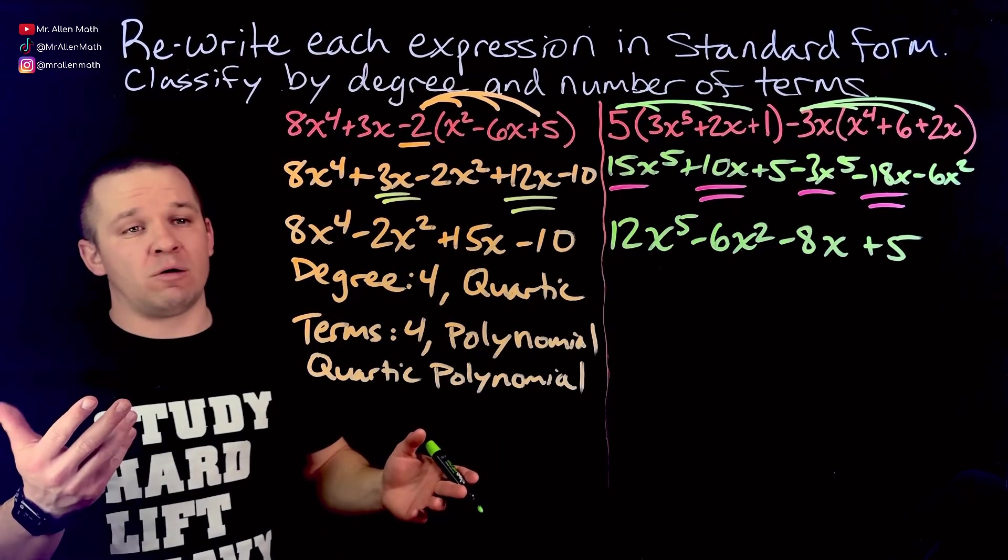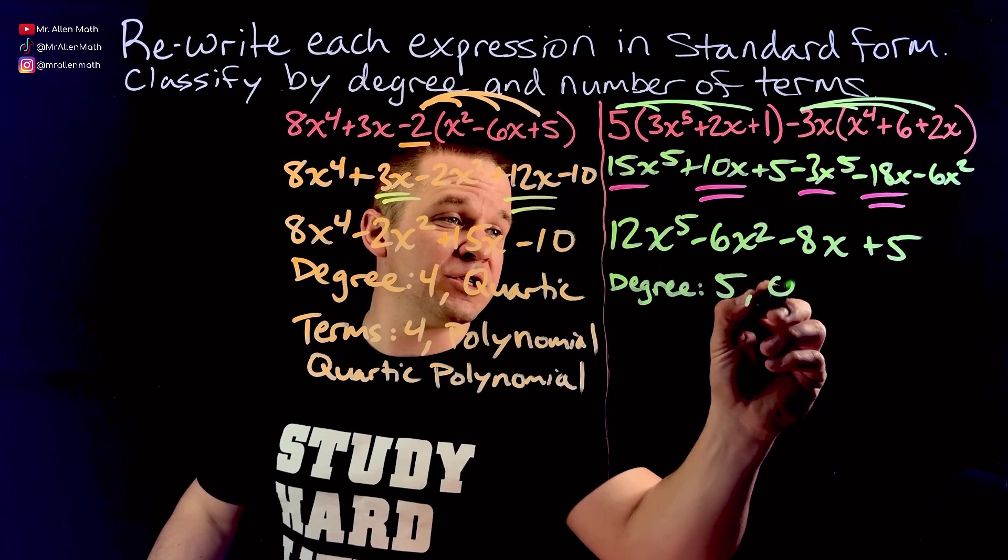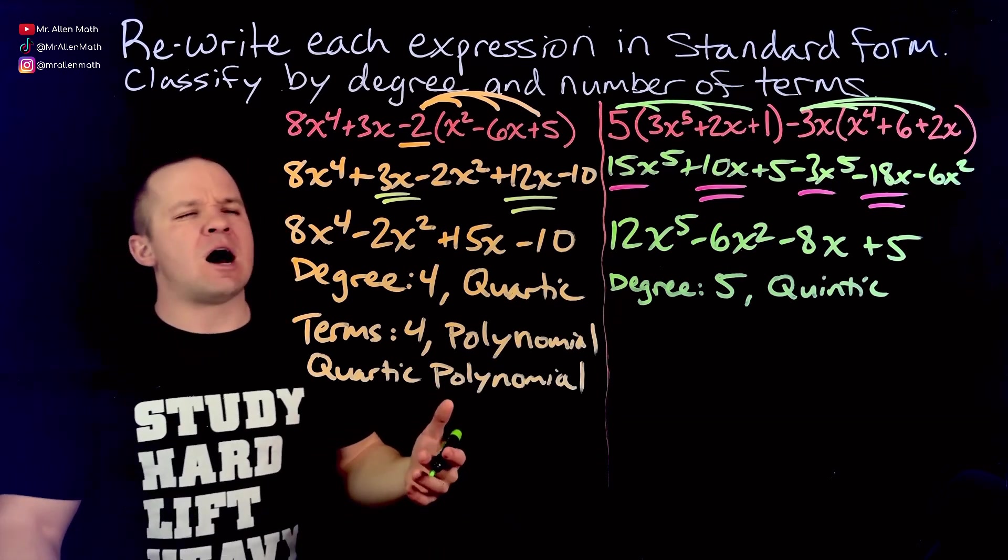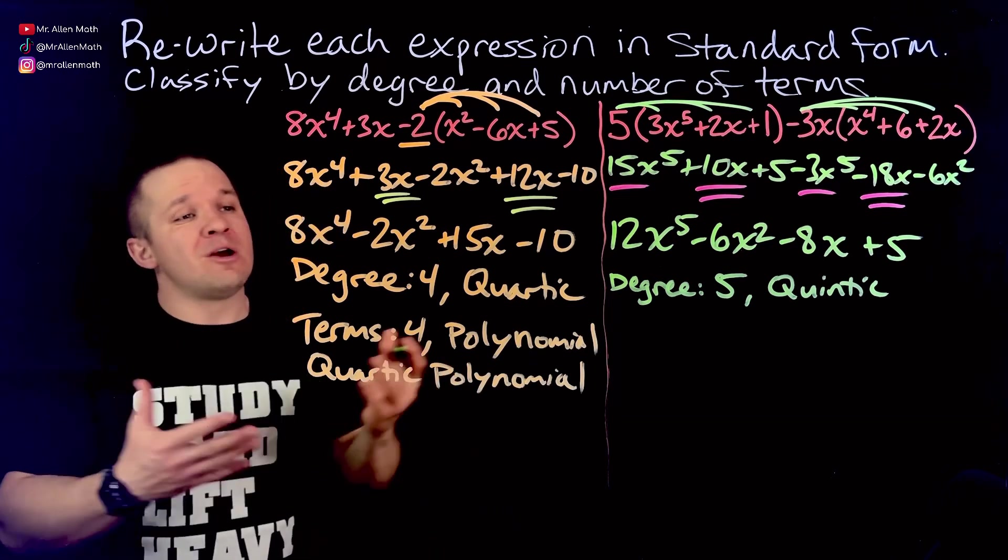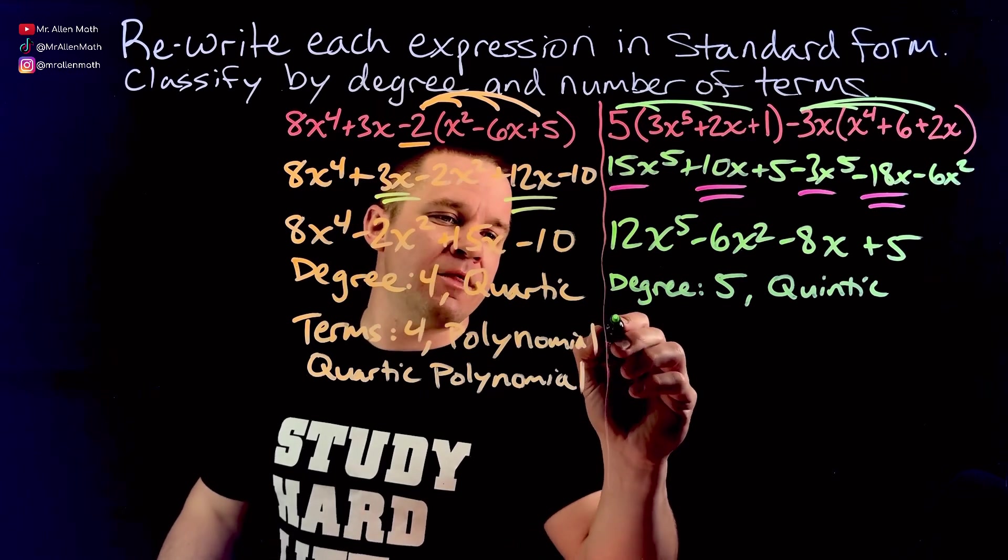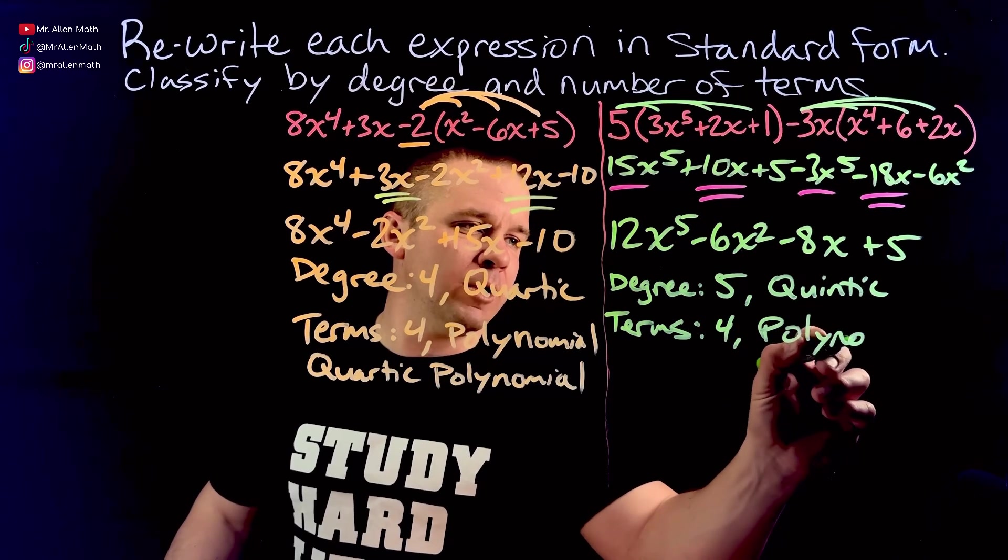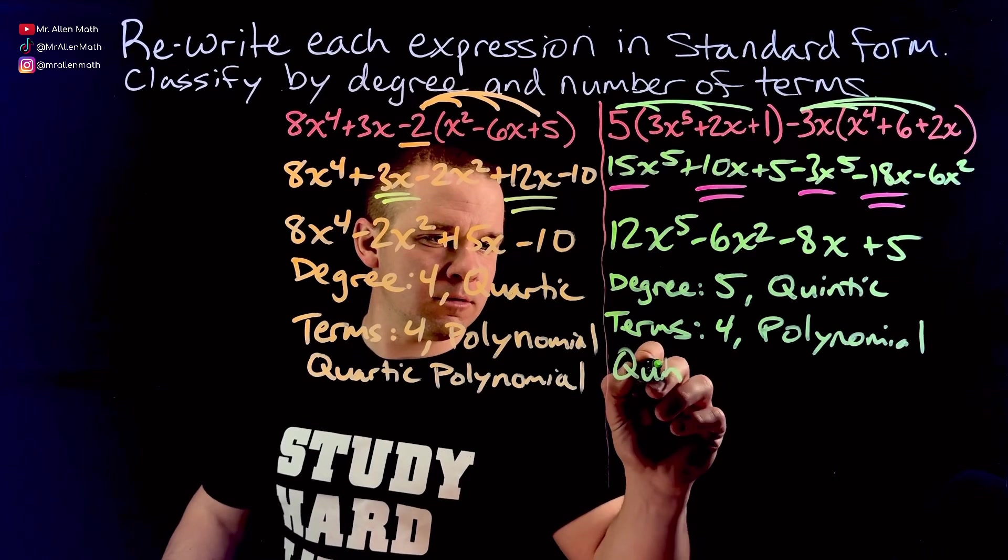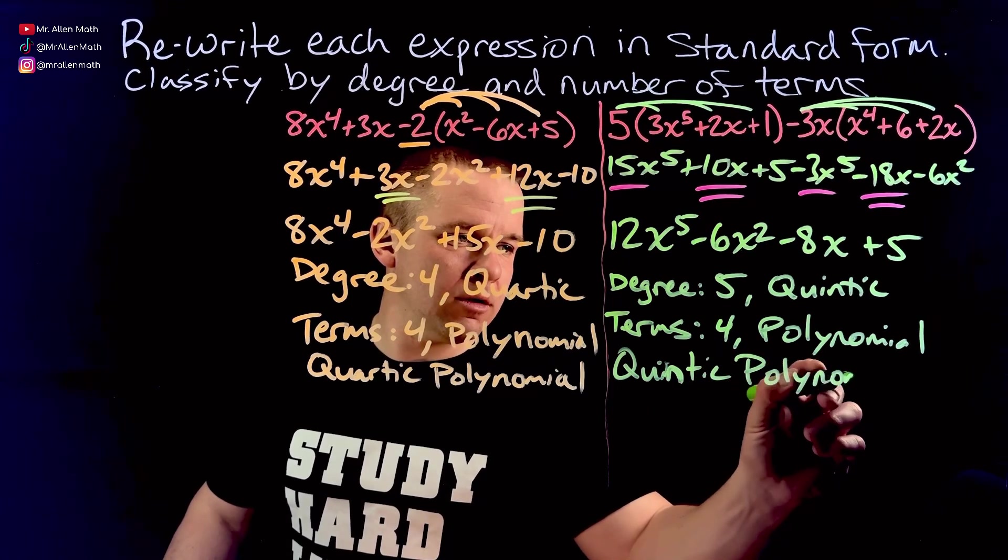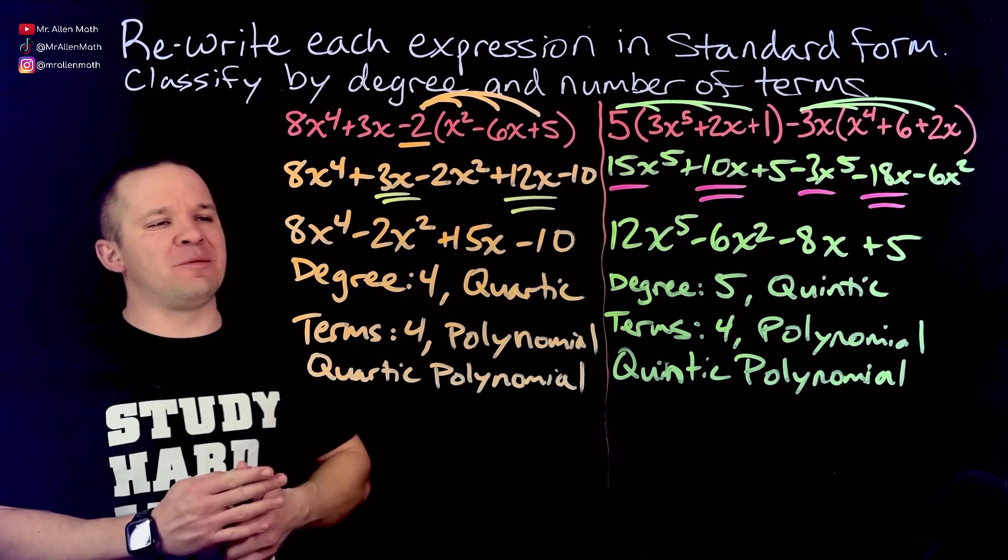So let's put these bad boys together. 15x to the fifth negative 3x to the fifth, 15 minus 3 is 12x to the fifth. And then our next highest term is the quadratic in this case, so minus 6x squared. Then I have the linear terms 10x negative 18x, 10 minus 18 is negative 8x and then the plus 5. There we go, took care of all of them. So we once again have four terms, a polynomial, but our degree is five. So degree five which is quintic. It's a fun name, quintic.